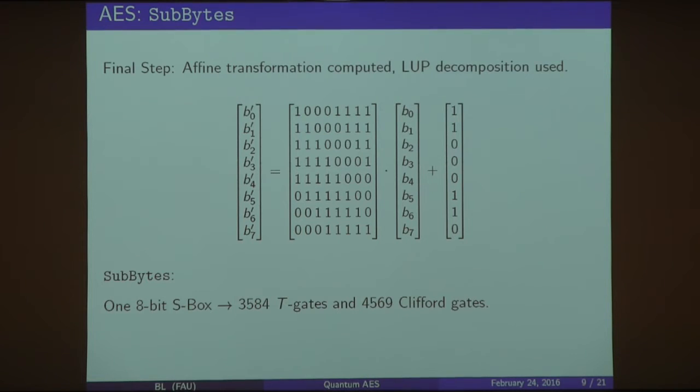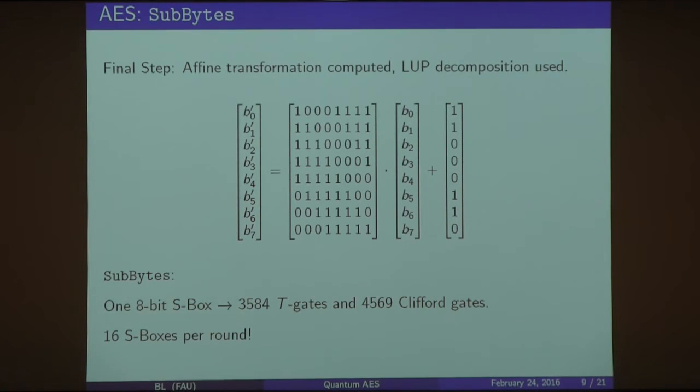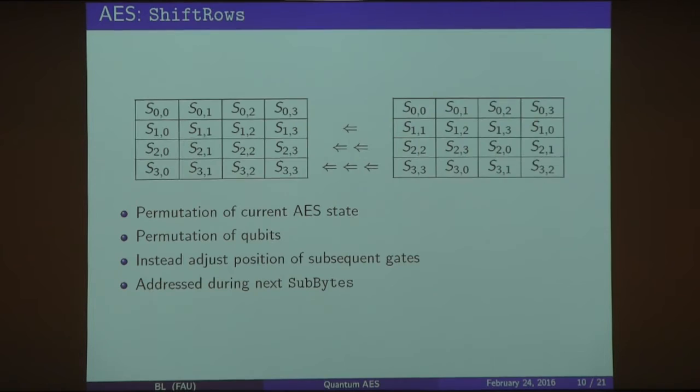This matrix can be computed in place using the LUP decomposition, and then four bits are flipped at the end to compute this vector. So what that gives you at the very end of your SubBytes operation is, in order to compute one round of this, it's 3,584 T gates, which again comes from all the multiplication, and 4,569 Clifford gates. If you recall, the other number was 4,200 and something of those was just from the multiplications alone. So about 300 total gates were these LUP decompositions, these linear operations. And again, this is to find one inverse and the affine transformation, or one S-box. So again, it was a four by four array, 128 bits, so this has to happen 16 times per round.